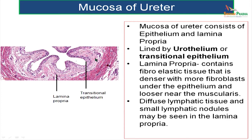Epithelium with lamina propria is the mucosa. The lamina propria contains fibroelastic connective tissue, which is very dense close to the epithelium. Close to the epithelium it is dense and has got more fibroblasts.